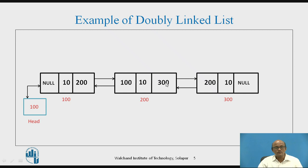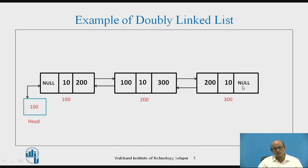The second node is stored at location 200, with data value 10. The previous pointer stores the address of the previous node, which is 100. The next pointer of this node stores 300, the starting address of the third node. In the first node, since there is no previous node, the previous pointer is set to null. And for the last node, the next pointer also points to null because there is no further node.